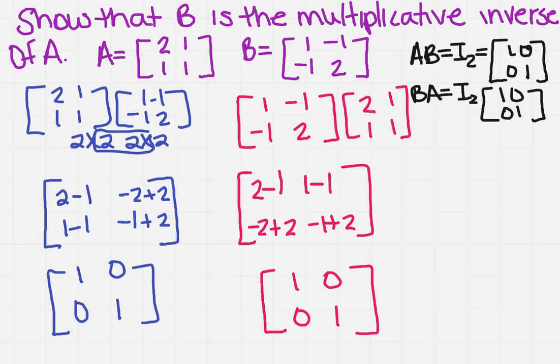So now that you've done B times A, you should get what I have in pink down here. And we notice that these two are the same. So this equals this. And then now we can say that B is the multiplicative inverse of A.